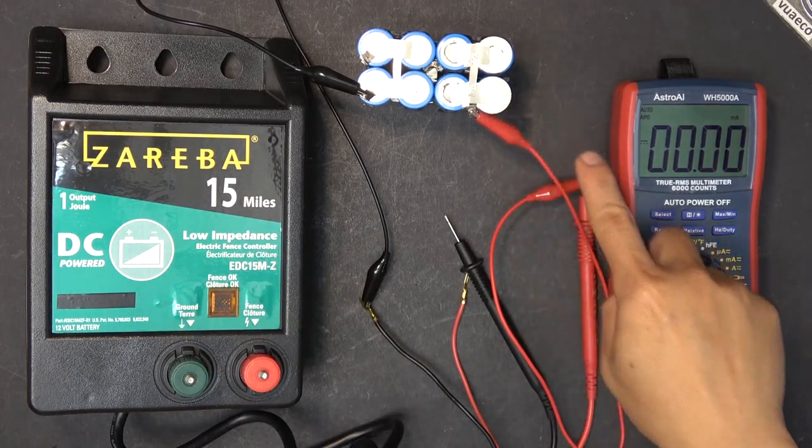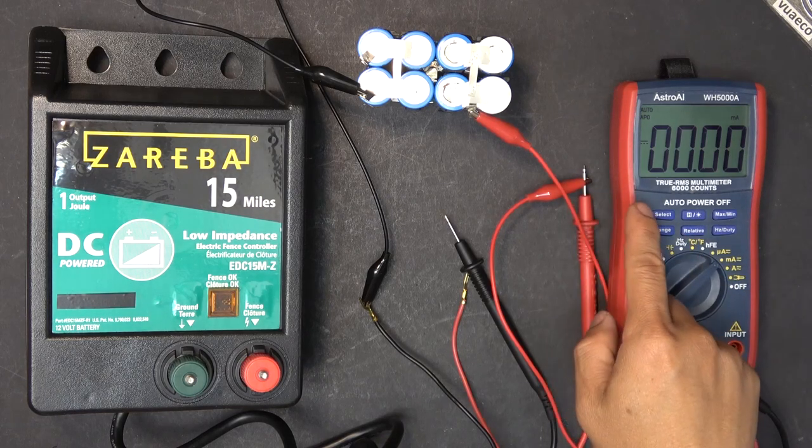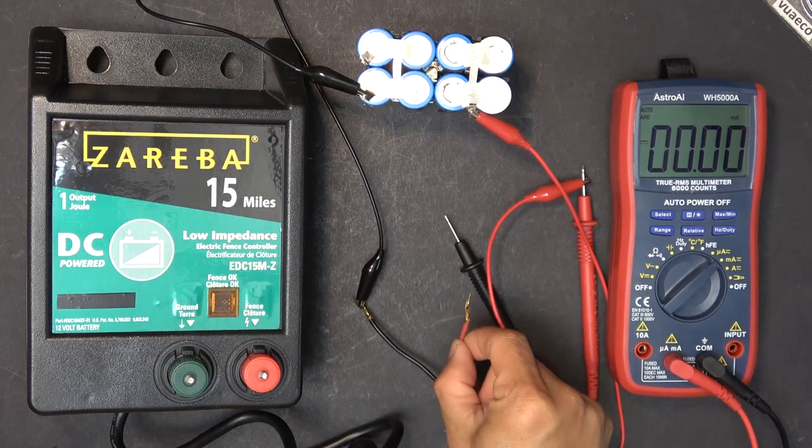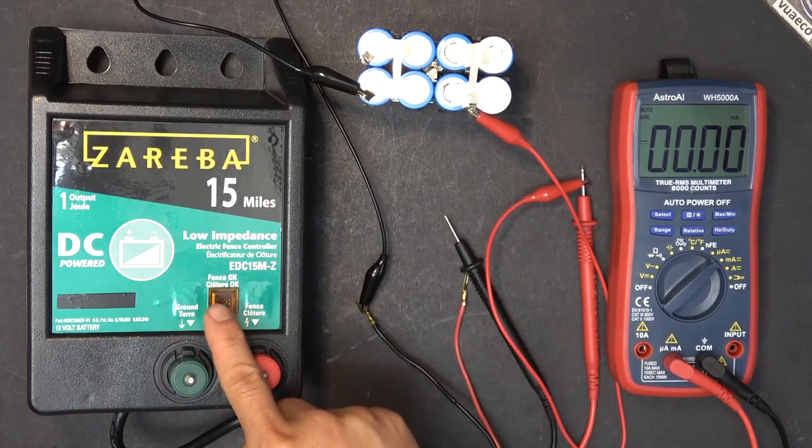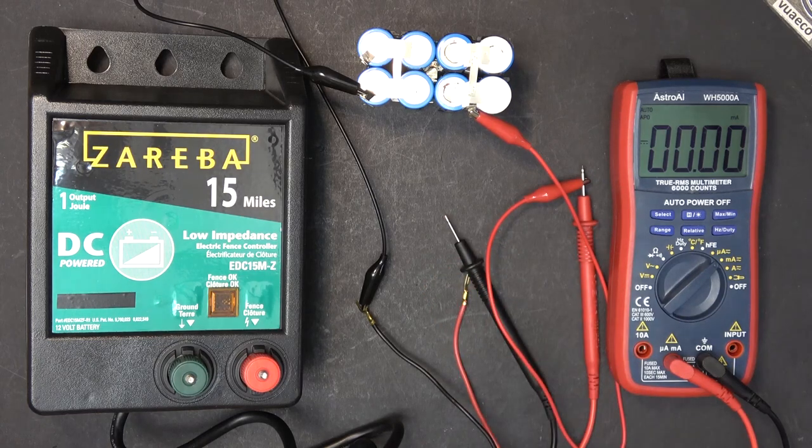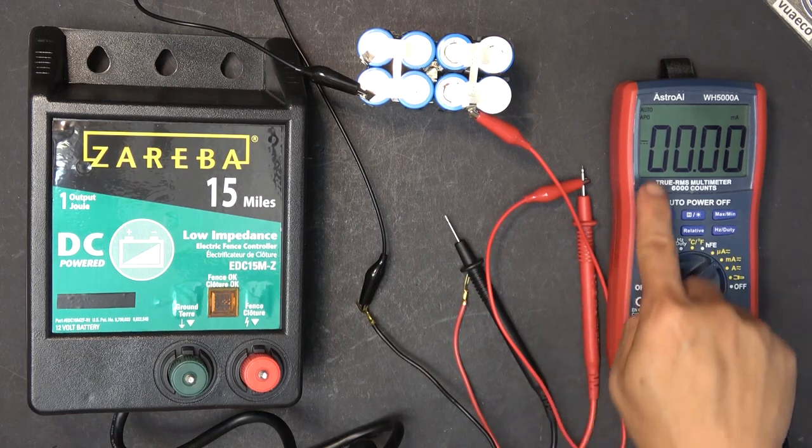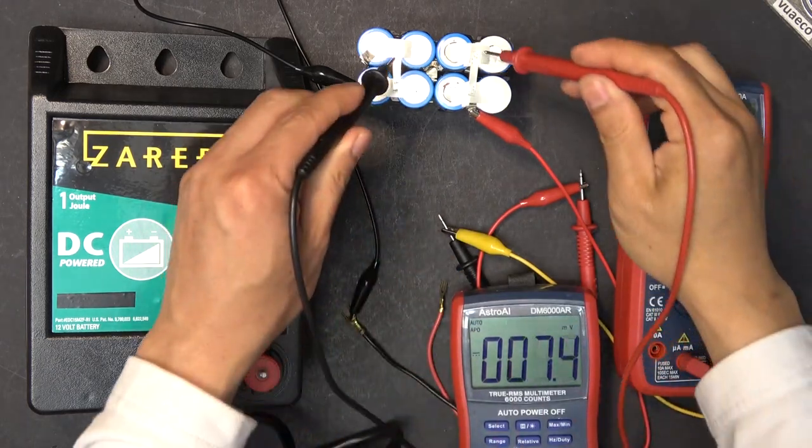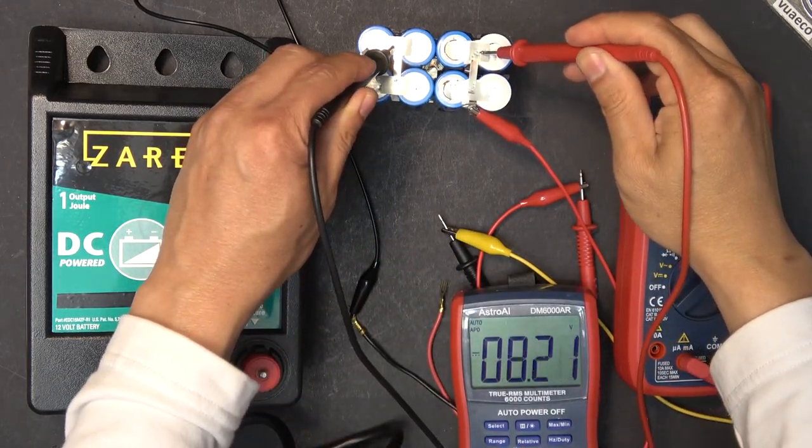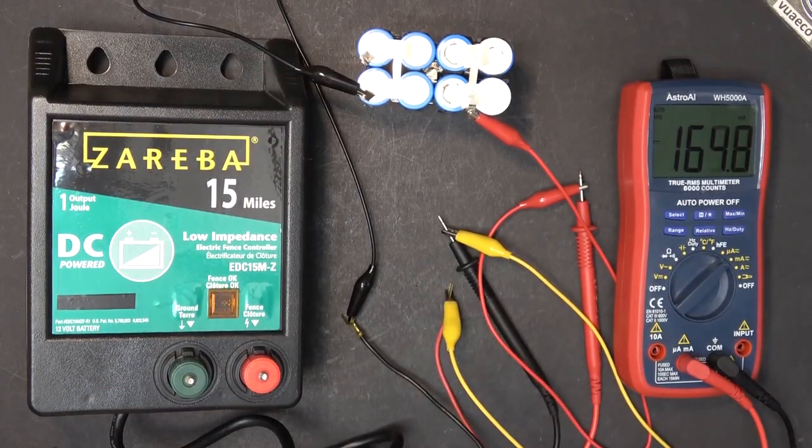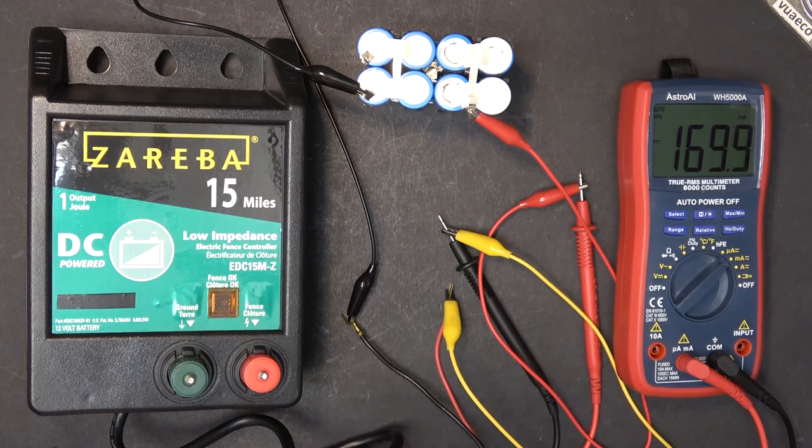From the positive of the battery goes to one probe of the meter and the other probe will go to the positive terminal of the controller. The polarity of these two probes is not important - you want to see a negative sign if this is in reverse. The battery right now is at 8.2 volts. Let's hook it up.